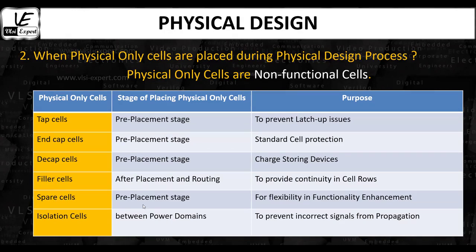Spare cells are added before the placement of standard cells throughout the design. The purpose of spare cells is to provide flexibility for future modification of the design. If any functionality issue is found in the chip after fabrication, or if functionality enhancement is required in the next fabrication, spare cells allow for easy modification. Spare cells enable us to modify or improve the chip's functionality with minimal changes in the mask — we can use already placed spare cells from nearby locations and modify the metal interconnect without altering the base layers.